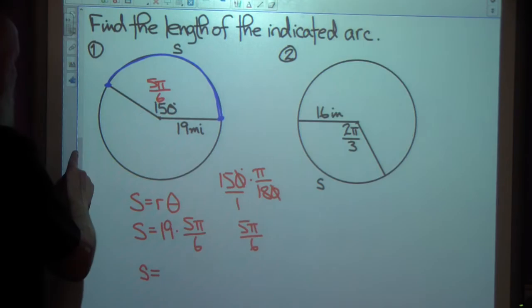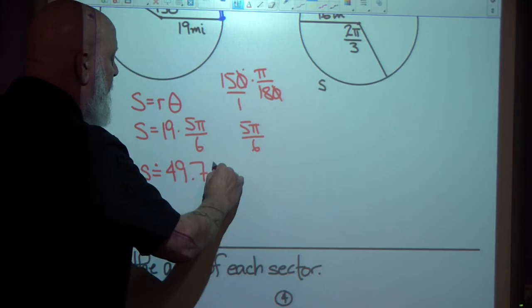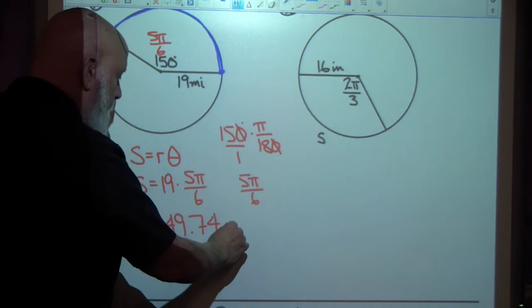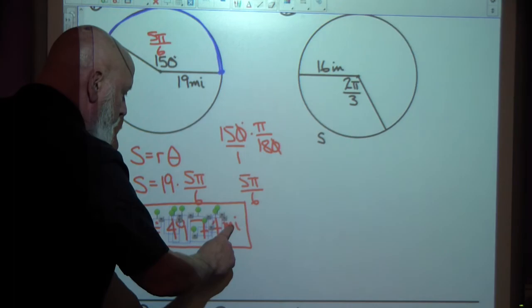Arc. Approximately 49.74. I'm rounding to the nearest hundredth. I just chose that randomly because it didn't say what to round it to. Miles.